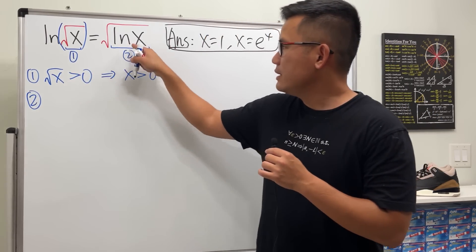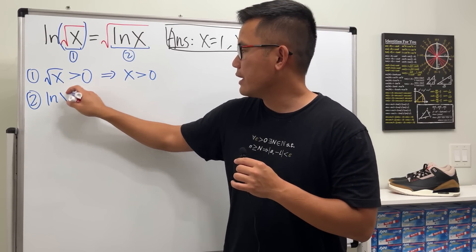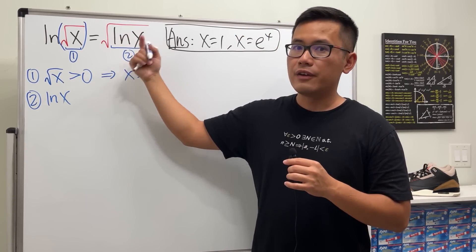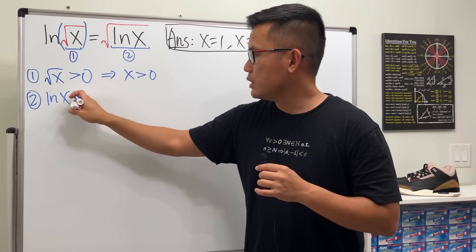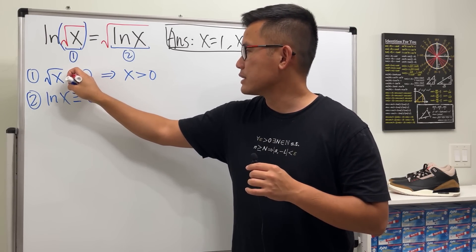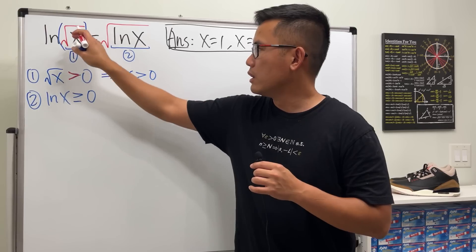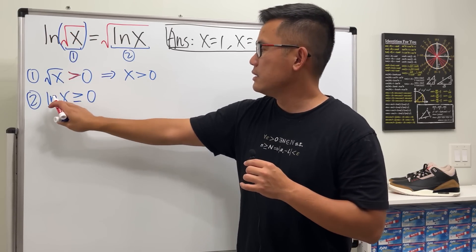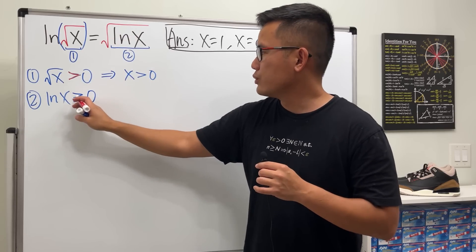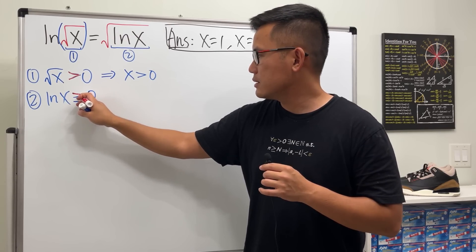Secondly, we want the inside, which is ln of x. But this inside of the square root has to be greater than or equal to 0. So this is how you set up the domain for ln function, and the domain for square root function. So that's the interesting part.